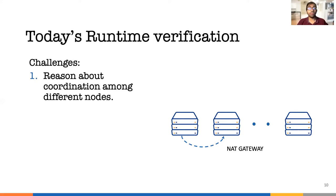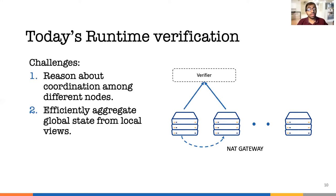In our example, we had to reason about events at different NatGateways. Second, we need a way to efficiently aggregate global state after each individual event. In our example, we must collect events from all NatGateways at a single place.